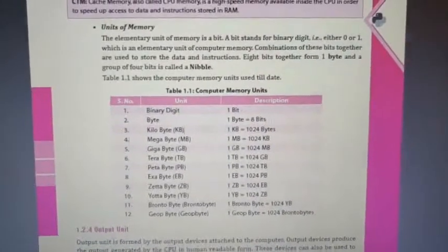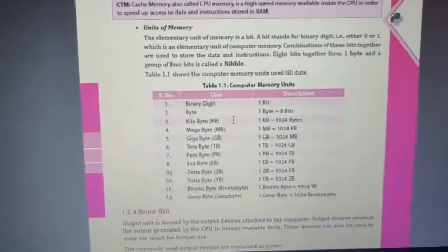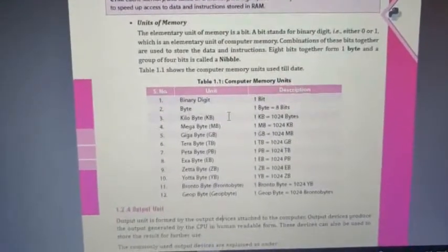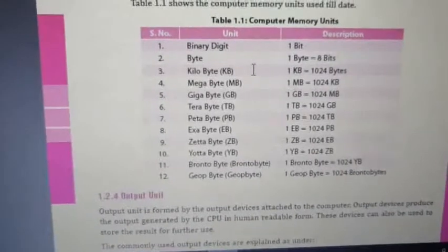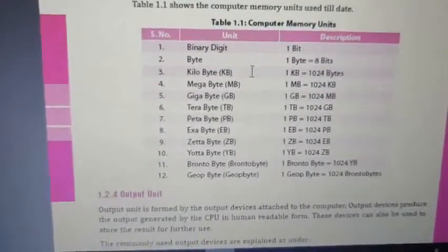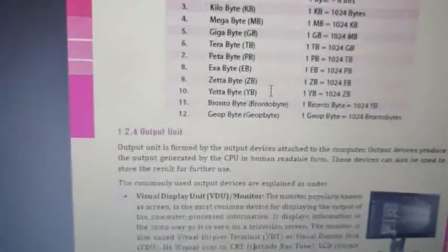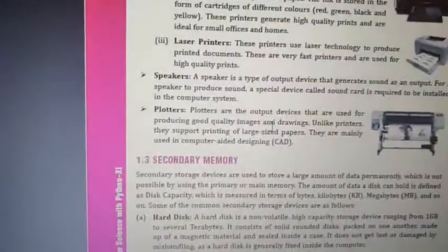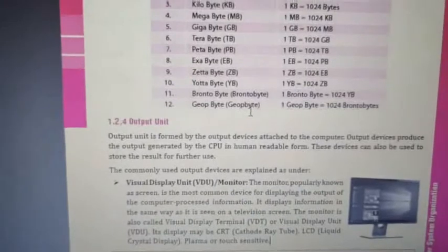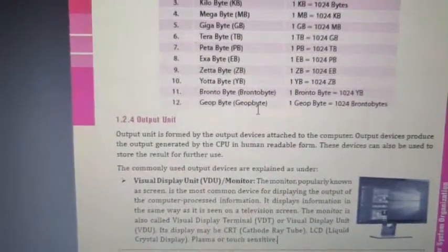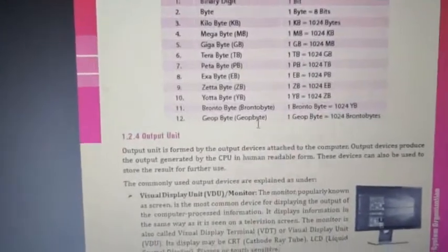Next let's talk about output devices. In the last class we learned about input devices; today we learn about output devices. An output unit is formed by the output devices attached to the computer. Output devices produce the output generated by the CPU in a human-readable form. These devices can also be used to store results for further use. First is the monitor — also called VDU, which stands for Visual Display Unit.